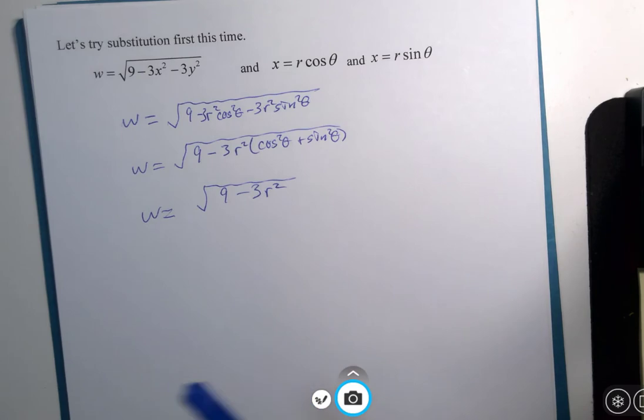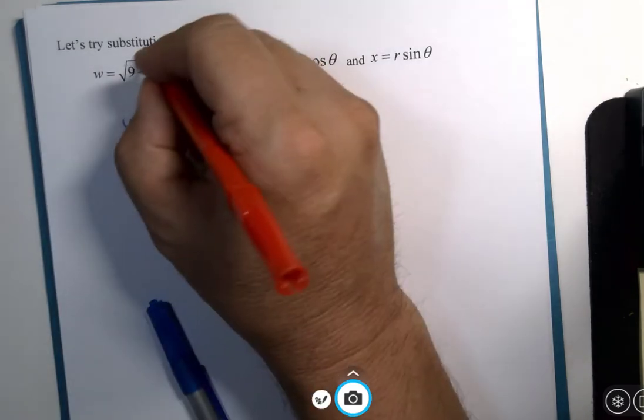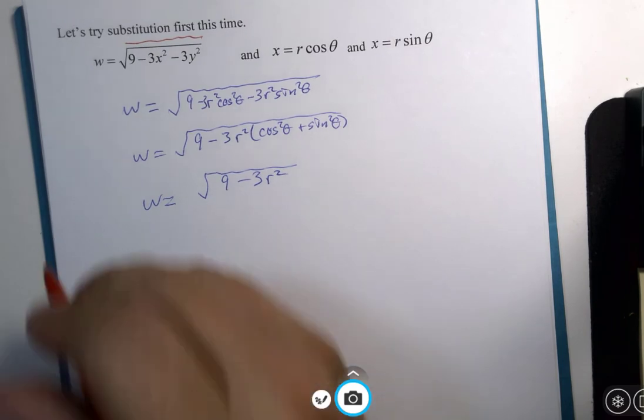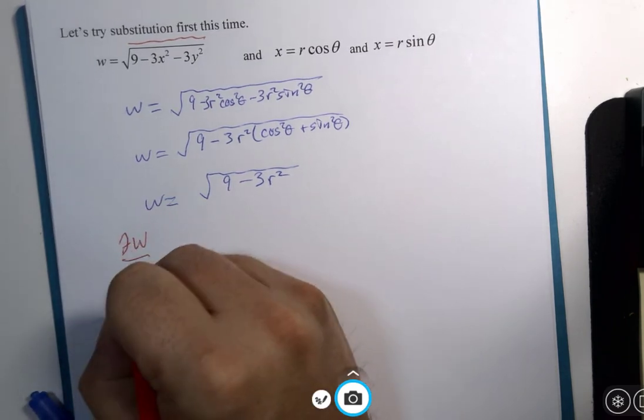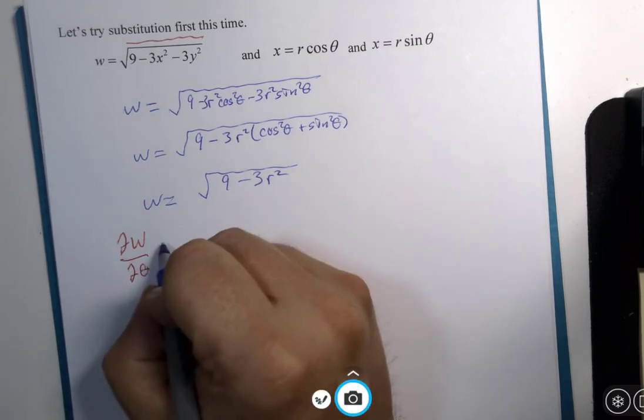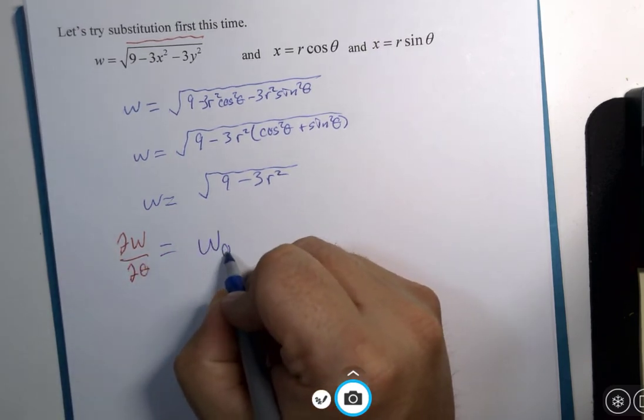So this is substitution first. So now what is the partial of w with respect to theta, otherwise known as w sub theta?